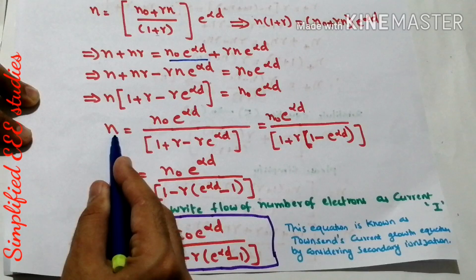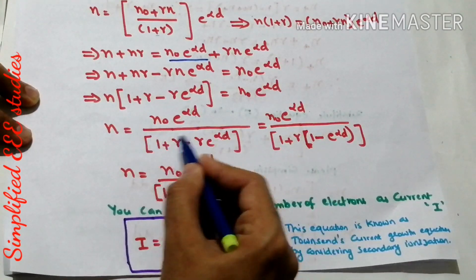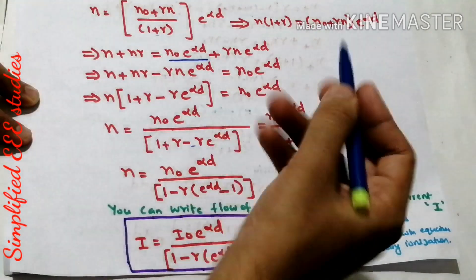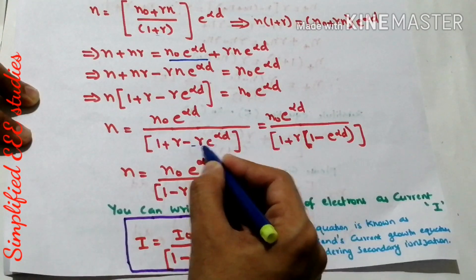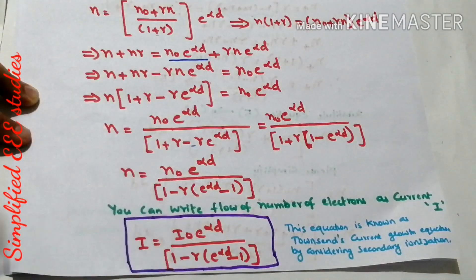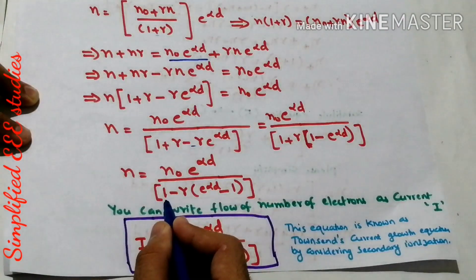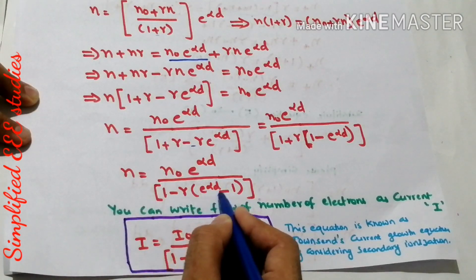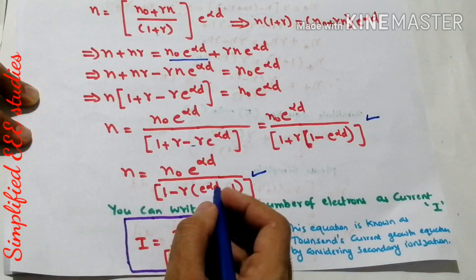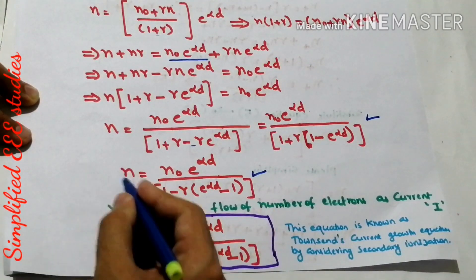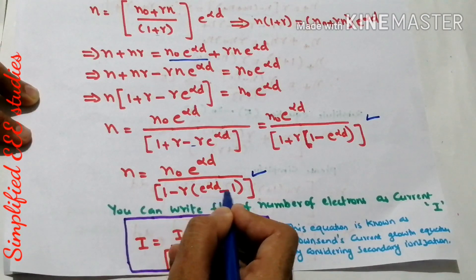From this expression, separating the value of N: N = N₀·e^(αd) / [1 + γ − γ·e^(αd)]. This can also be written as N = N₀·e^(αd) / [1 − γ(e^(αd) − 1)]. Both forms are correct. In textbooks you will observe the expression in terms of number of electrons written as N = N₀·e^(αd) / [1 − γ(e^(αd) − 1)].